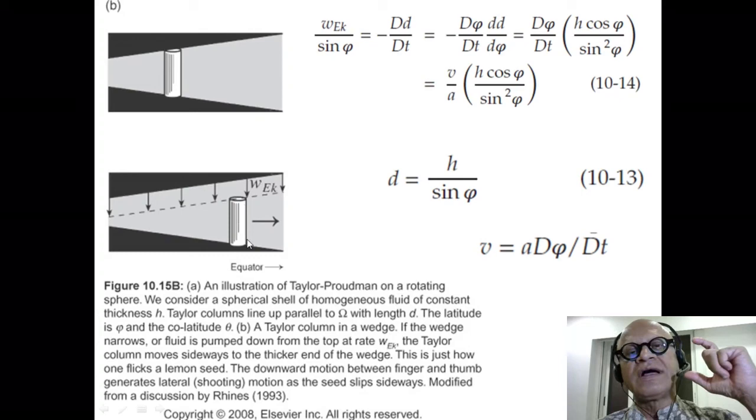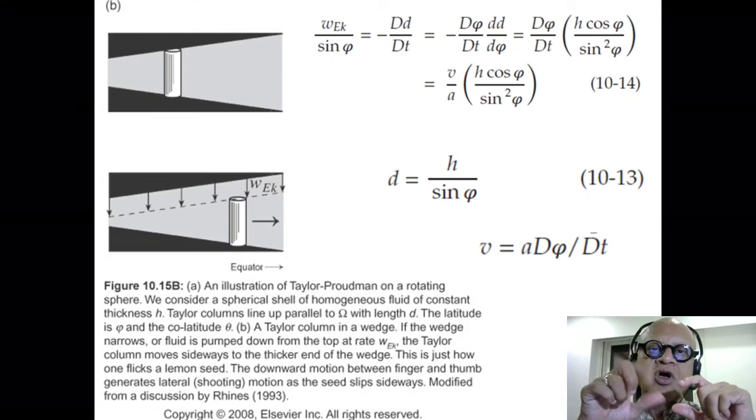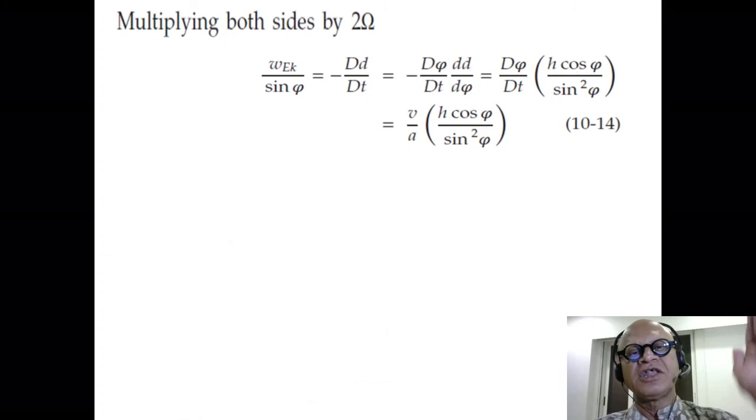So intuitively think that Ekman pumping into the interior has to adjust the water column somehow to remain two-dimensional parallel to the axis of rotation. And it can do that by moving latitudinally, which stretches the water column—doesn't make it fat. So the flow remains steady.